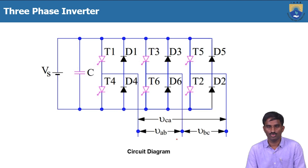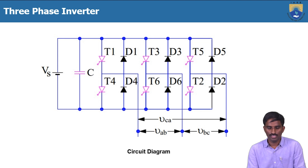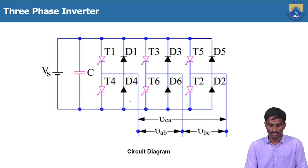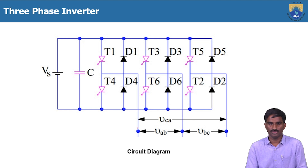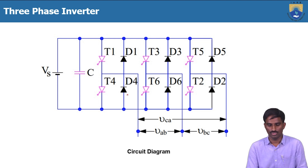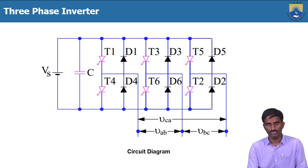We will now discuss the three-phase inverter with 180-degree conduction mode. The 180-degree and 120-degree conduction modes refer to the conduction duration of each thyristor. In the circuit diagram, the three-phase inverter consists of six switches total — two series-connected thyristors per leg — each switch having an anti-parallel diode. For simple understanding of the operating principle, we are going to consider only resistive (R) load.